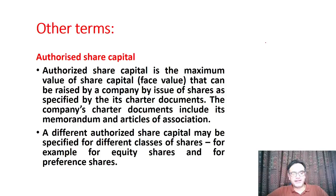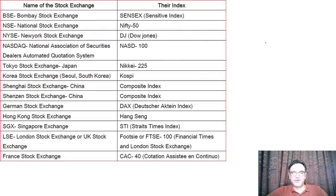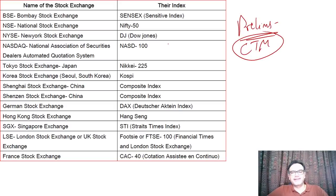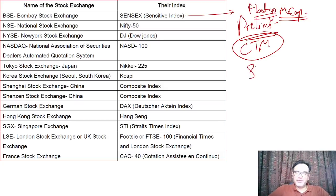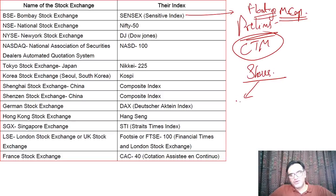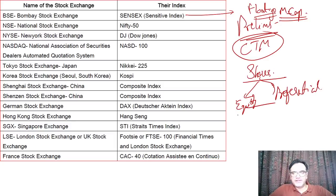For Prelims, this is a very important table: which stock exchange and what is their index. Sensex is based on floating market capitalization (MCAP) — the amount of money generated by a company by selling its equity shares that are available for trading. Sensex is BSE-30: top 30 companies by floating MCAP. Nifty is NSE-50: top 50 companies. Nifty Junior is the next 100 companies. BSE also has indices: BSE 200 and BSE 500.